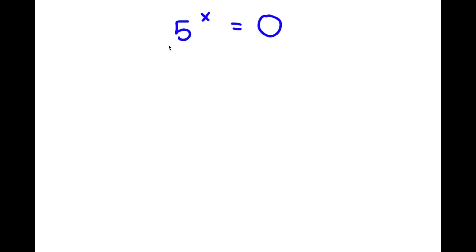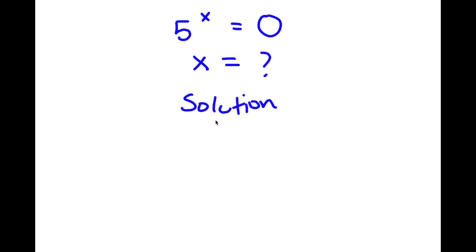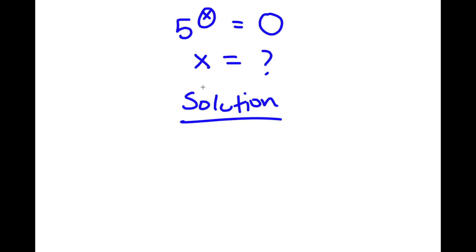In this problem, I have 5 to the power of x is equal to 0. I obviously want to find the value of x here. For my solution, I'm going to first start by trying out values of x.